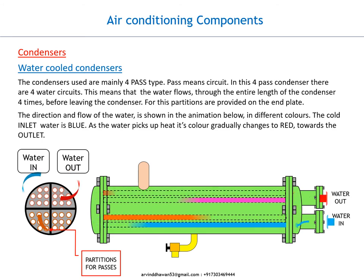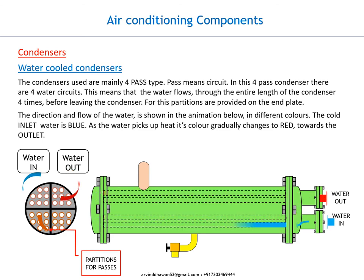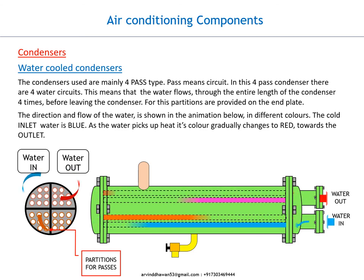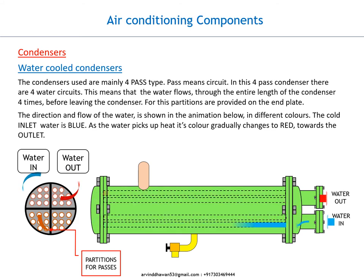Four partitions are provided on the end plate. The direction and flow of the water is shown in the animation below in different colors. The cold inlet water is blue. As the water picks up heat, its color gradually changes to red towards the outlet.